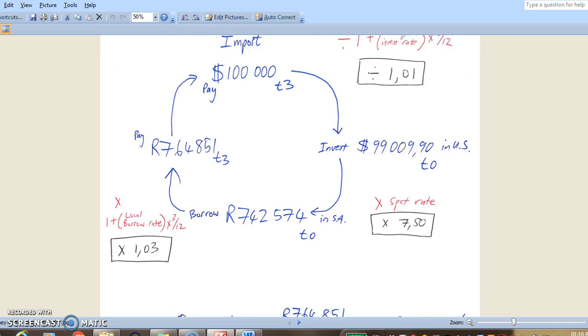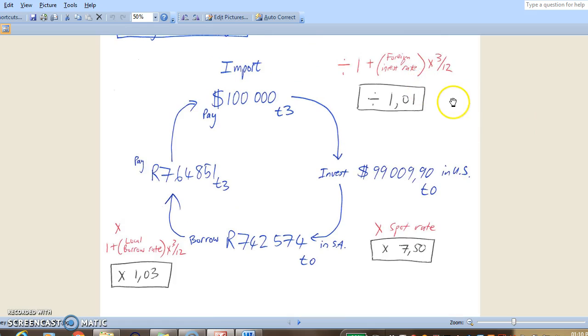If you look at the calculations in red and black here, we have the spot rate multiplied by 1 plus the local borrowing rate divided by 1 plus the foreign interest rate. So that is the formula for the forward rate. Calculate from the spot rate to the forward rate.